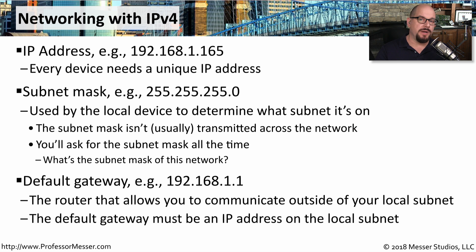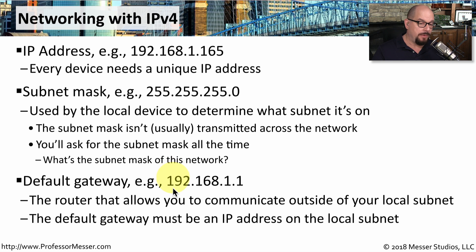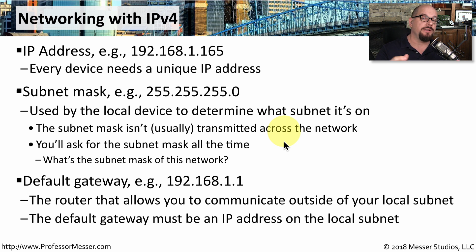With just the IP address and the subnet mask, you're able to communicate to other devices on your local network. But if you ever want to communicate outside of your local IP subnet, then you'll need the default gateway or router IP address. So on my network, the router IP address might be 192.168.1.1. That means if I wanted to configure this device to communicate to other devices on my local subnet and communicate to devices outside of my local subnet, I'll need to provide the IP address, the subnet mask, and the default gateway.